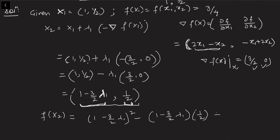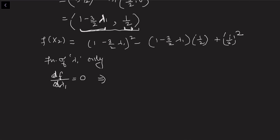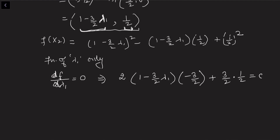Since f(x2) is now a function of λ1 only, to find the minimum we set df/dλ1 = 0. Taking the derivative: 2(1 − 3λ1/2)(−3/2) + (3/2)(1/2) = 0. Solving this equation gives λ1 = 1/2. So we travel half a unit along the gradient direction.